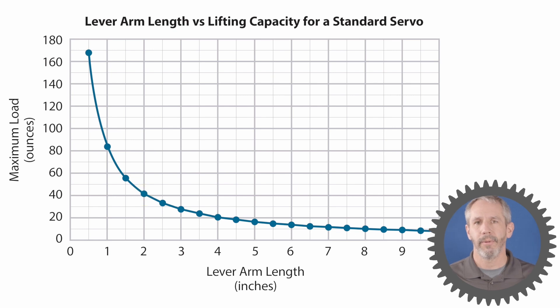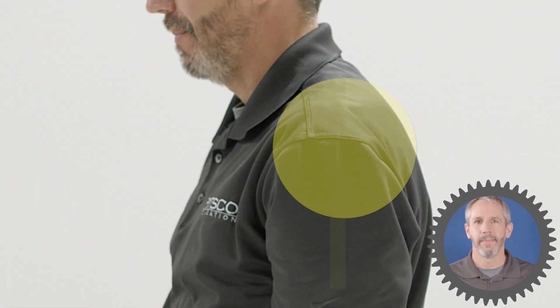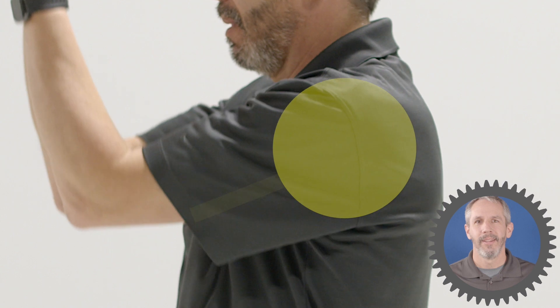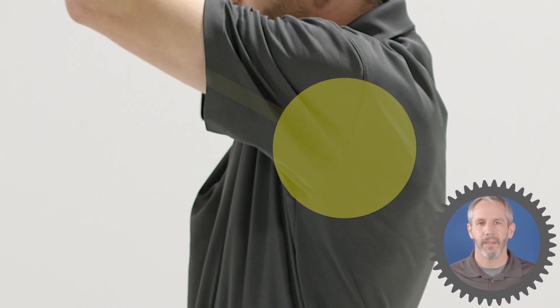Here's a graph that shows you the relationship between the length of the lever arm and the amount of weight the servo can lift. So you can see that as the lever arm length increases along the x-axis, the amount of weight the servo can lift decreases along the y-axis. So the longer your lever arm, the less weight you can lift. Think of it this way: your shoulders are like the servo that does the lifting, and your arms are like the lever arm. When your arms are in close to your body, your shoulders can lift a lot more weight than when they are outstretched away from your body.